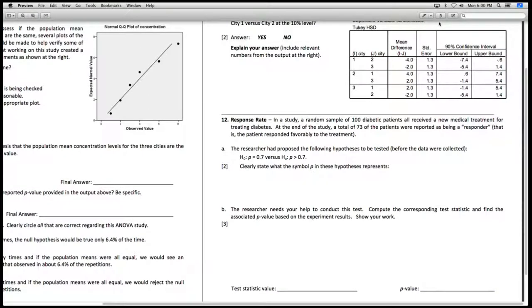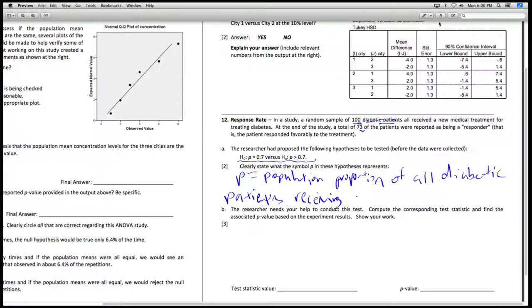Okay, in question number 12, we basically have 73 patients responding positively out of 100, and we have a null hypothesis and an alternative. So what does P represent? P is just the population proportion of all diabetic patients receiving new treatments that respond, right? Because we're interested in people that are responders.